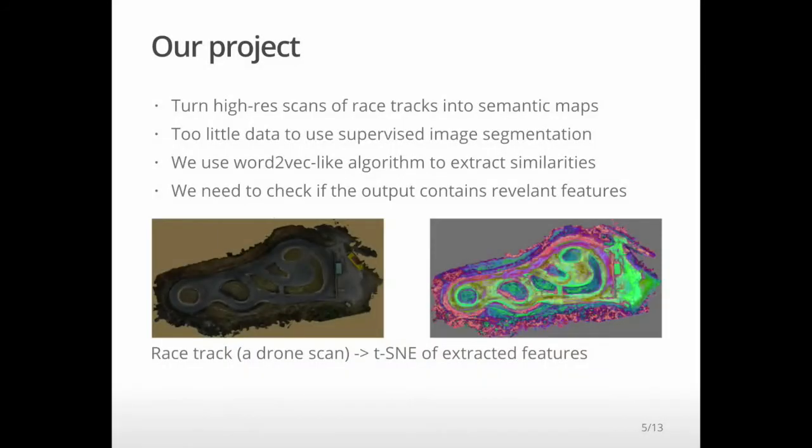When it comes to our project, we basically have high resolution scans of racetracks. We want to turn them into semantic maps. There's not enough data to use supervised image segmentation. They're very diverse. But we can use something like word2vec-like algorithm to extract similarities. We need to check if the output contains relevant features.